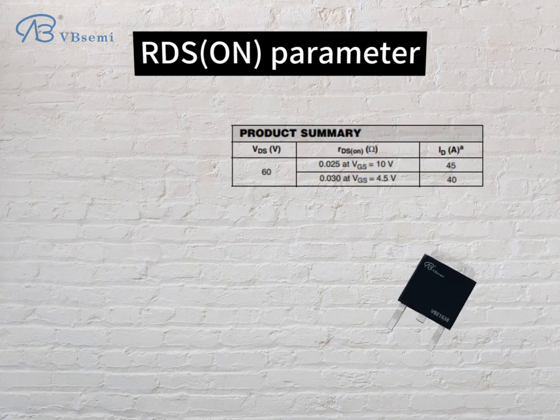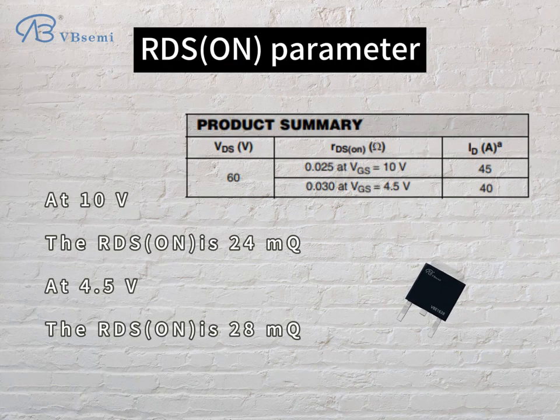Threshold voltage 1.8V. RDS-ON parameters: at 10V, the RDS-ON is 24mΩ; at 4.5V, the RDS-ON is 28mΩ.